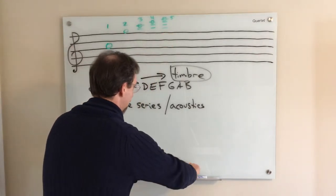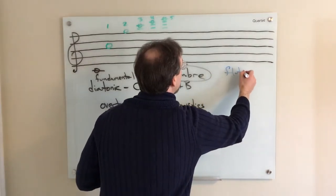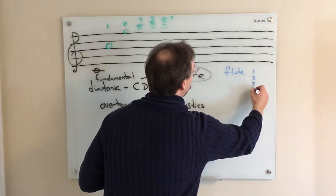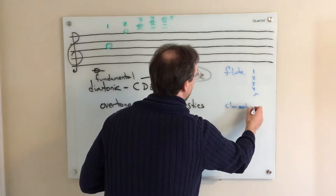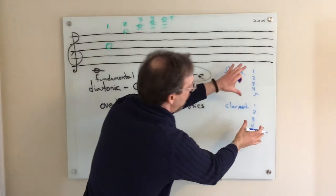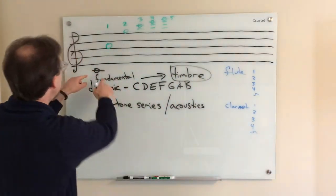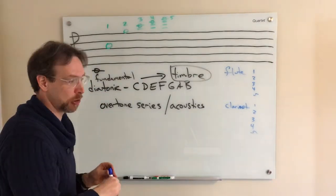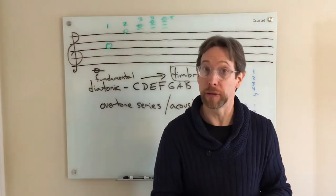For a flute, the intensity of overtones one through five is going to be different than for other instruments — how loud each one is, what percentage of volume each one carries. It's going to be different for different instruments even though you hear the same fundamental pitch. So this overtone series is kind of like the science of sound, of music.